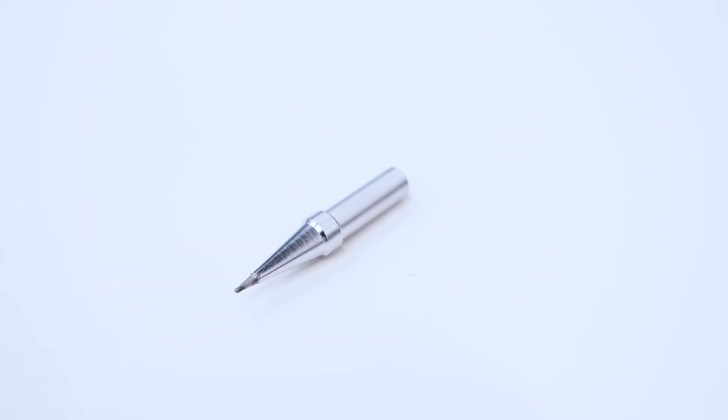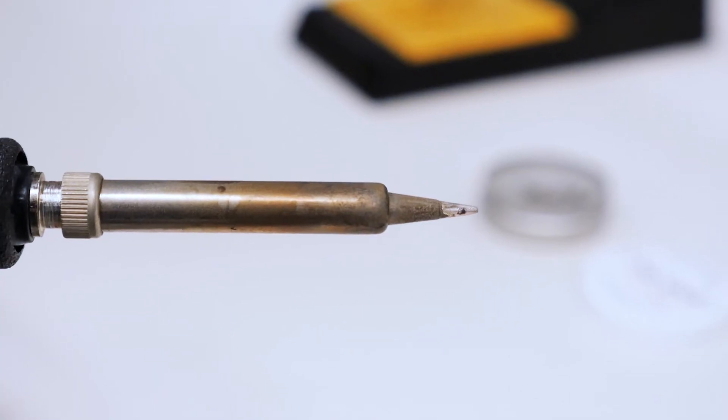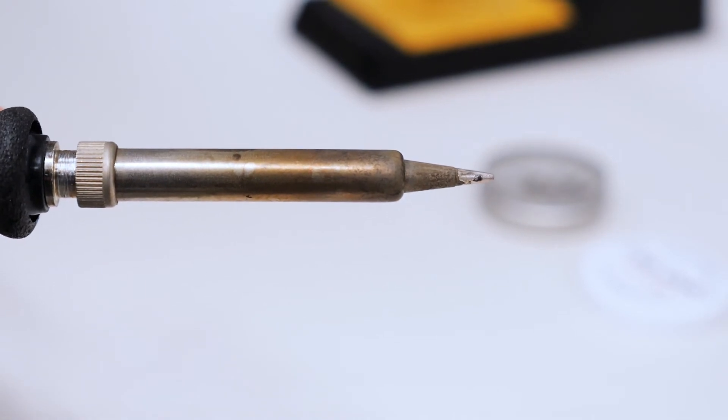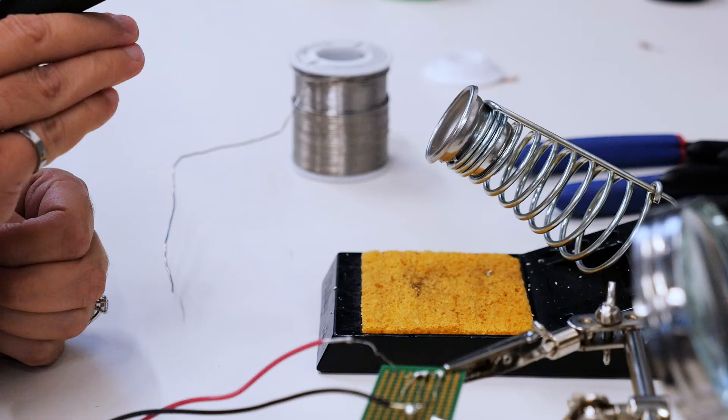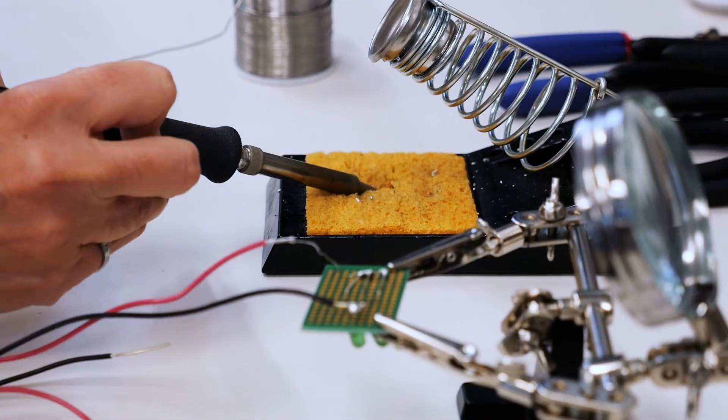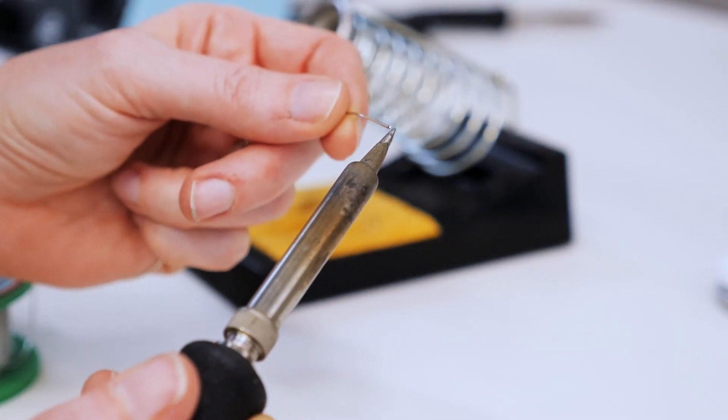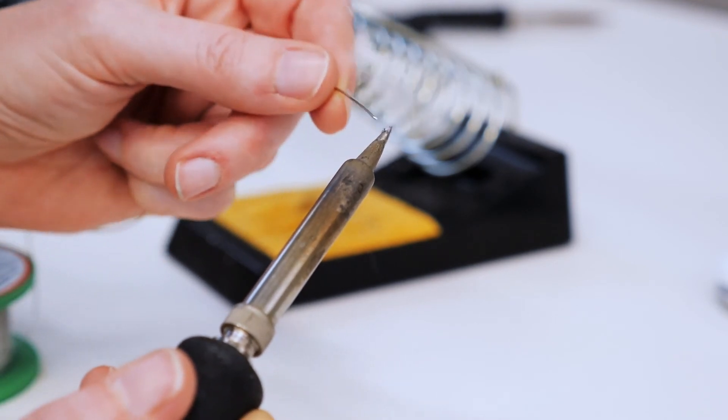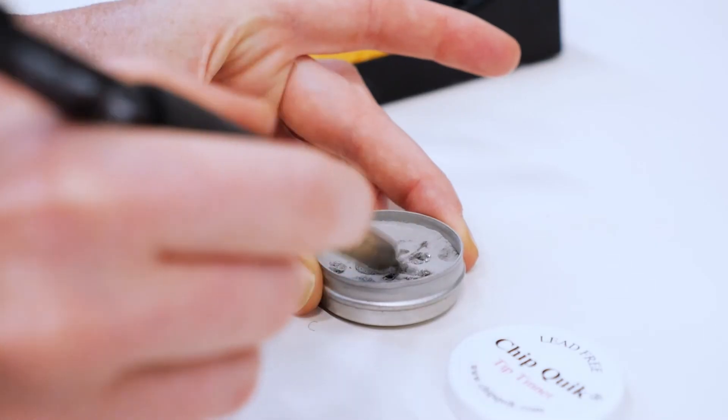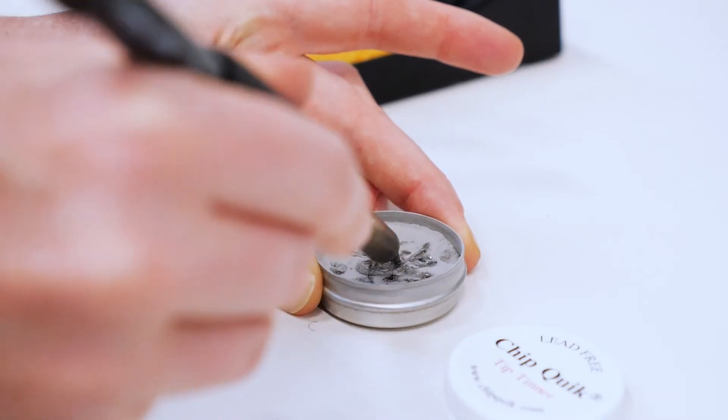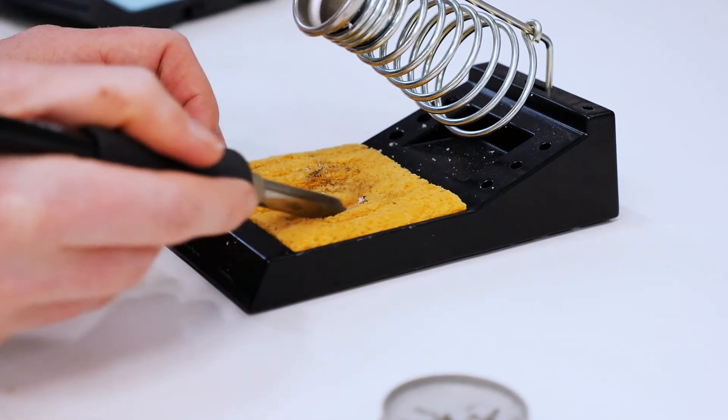If you're using a brand new iron tip or if the tip looks a bit burnt or oxidized you should tin it so that it will conduct heat better. To tin a tip clean the heated soldering iron tip as usual and then apply a small amount of solder to coat the tip of the iron. Alternatively you can apply some lead-free tip tinner to the heated soldering iron and use a wet sponge or brass wool to smooth the coating.